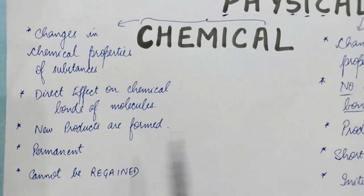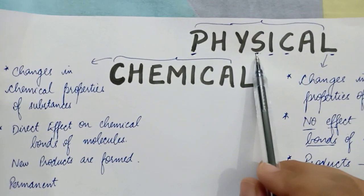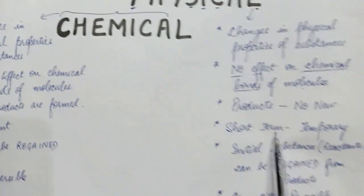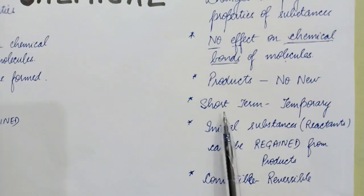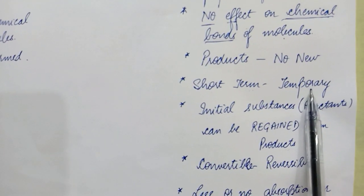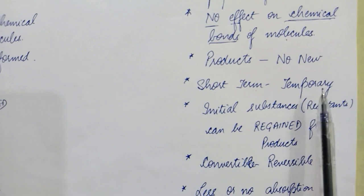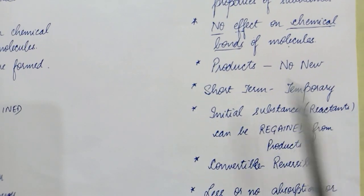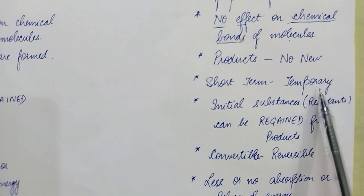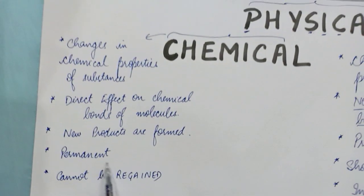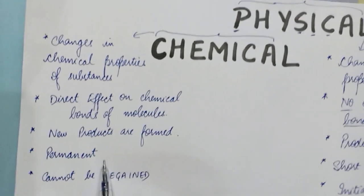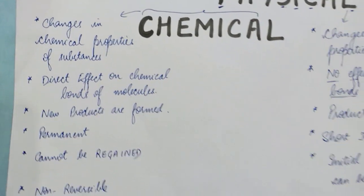From the S alphabet of 'physical,' always remember that physical changes are short-term in nature. Another word for short-term is temporary — that is, only for a short duration, and they can be reversed. So physical changes are temporary in nature. On the other hand, just take the opposite of temporary: chemical changes are permanent in nature. Once they have taken place, the product cannot be converted back into reactants.